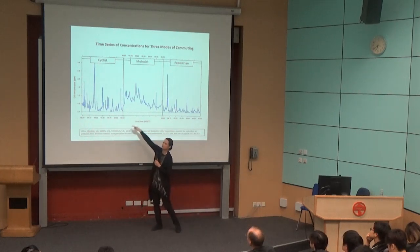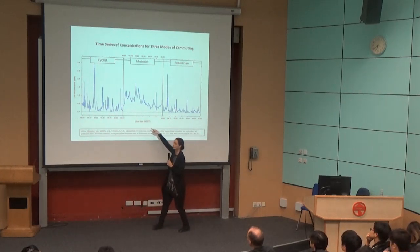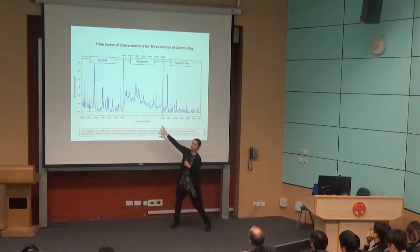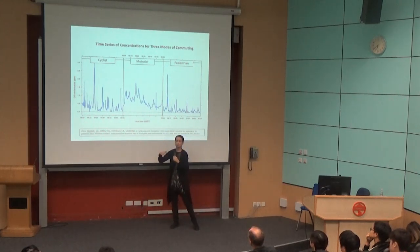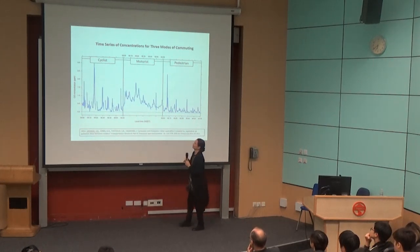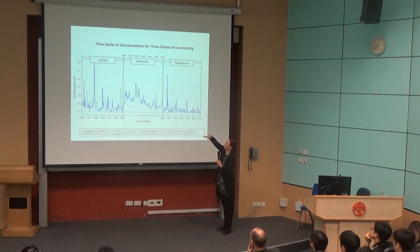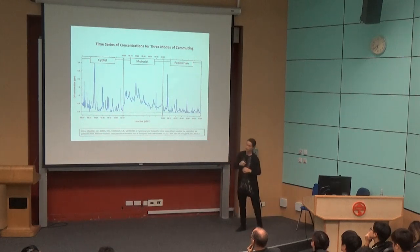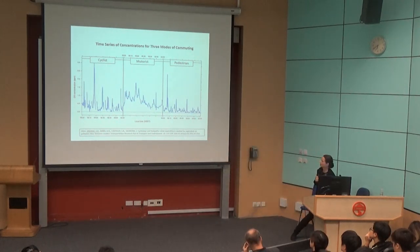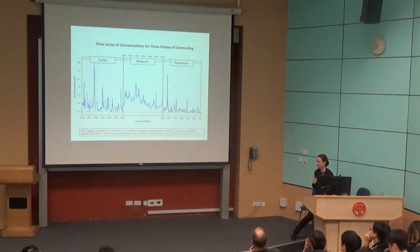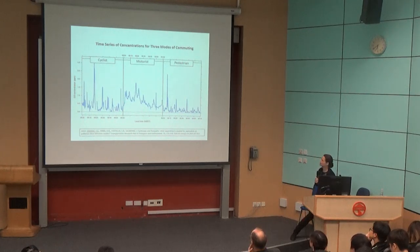For the cyclist and the pedestrian you still get quite big concentration peaks that you don't get with the car, because the person driving has a box around them, protecting them from those spikes in pollution. So despite the mean being higher for the car, the peak is actually lower than the other two. We had ten days of data covering a huge range of meteorological conditions — from very windy to completely calm — so we got a complete range during those two weeks.